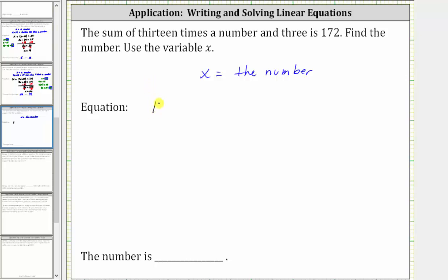This gives us the expression 13x plus three, and this is equal to 172. Again, we have the sum of 13 times a number, or 13 times x and three is 172.